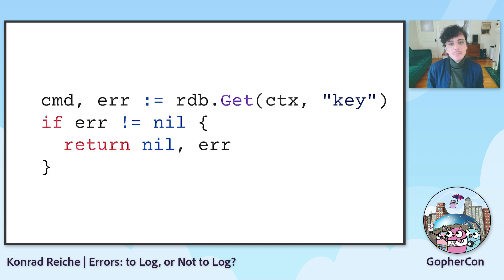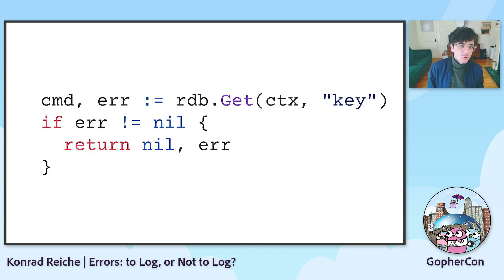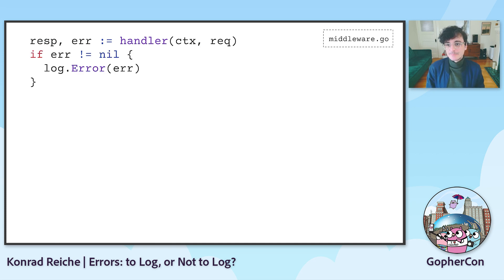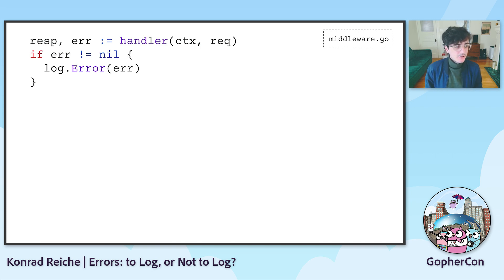Often you will just keep returning the error and you might be able to do this for a while, but eventually you will reach a point where you cannot pass the error up any further — for example, in a middleware. And you decide to log the error. This way you will be aware of all the errors happening in your system, providing you with a great error monitoring system, right? No — wrong!